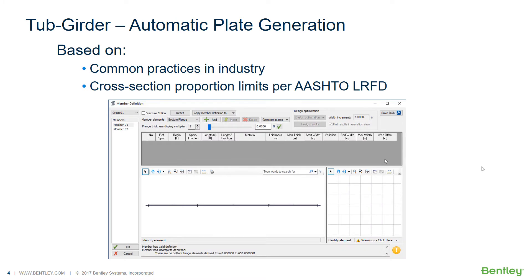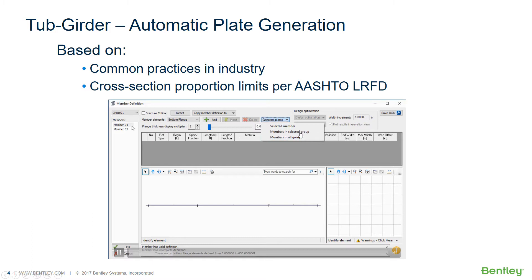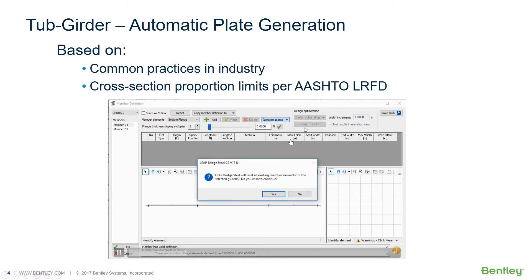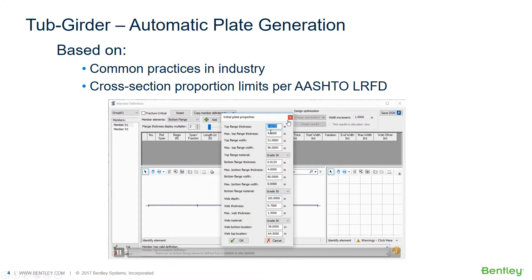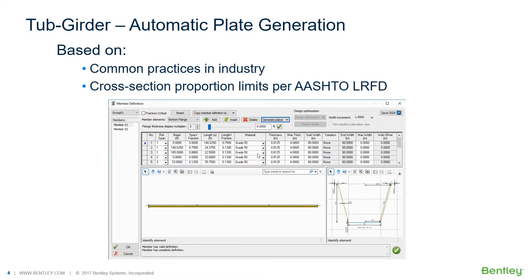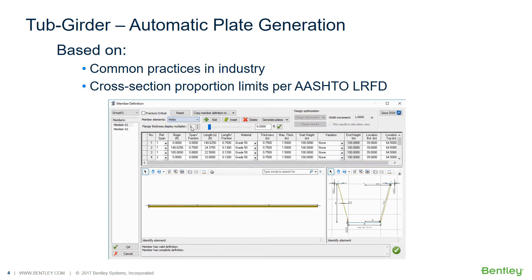For the tub girder, automatic plate generation lets you come in and generate plates. You select whether to generate for a selected member, all members in a group, or all members on the structure. It will ask to confirm resetting or deleting the existing data. A window then shows the recommended initial plate sizes along with some maximum value defaults. You can accept, modify, or override those, and clicking OK generates the plate definitions for the bottom flange, webs, and top flange.